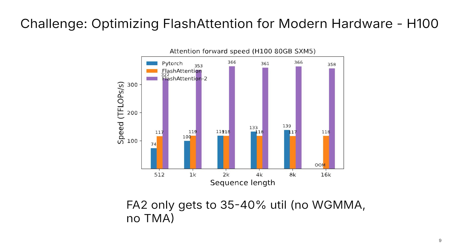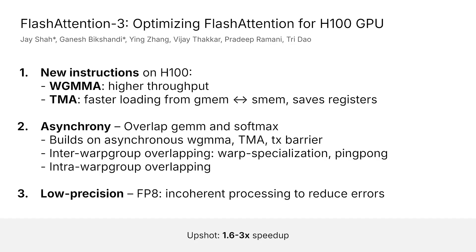We essentially took the A100 code and ran on H100 and get reasonable speed, but there's quite a bit of headroom — 35% MFU, 35% of the theoretical max. So there's a whole lot more we can do. How do we optimize for modern hardware? The Hopper is quite a bit different and requires a different way of thinking about programming. This is joint work with a bunch of folks at Kofax, Meta, and NVIDIA.